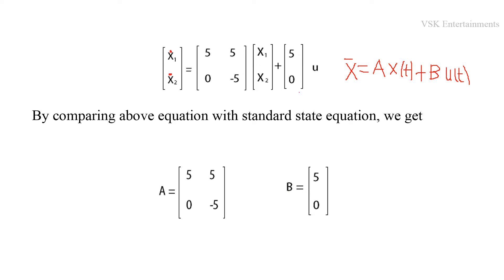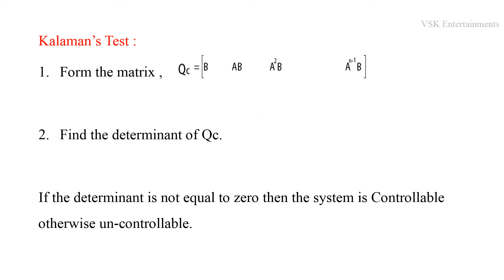We are going to compare the given state equation with the standard state equation. By comparing, we get system matrix A = [[5, 5], [0, -5]] and input matrix B = [5, 0]. By using Kalman's test, we have two steps for finding whether the given system is controllable or not.